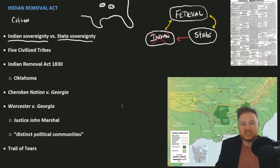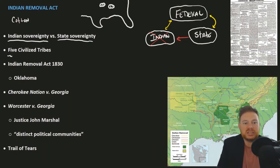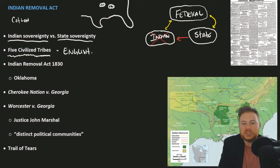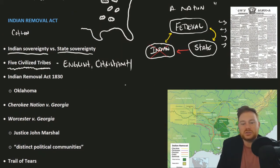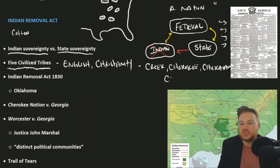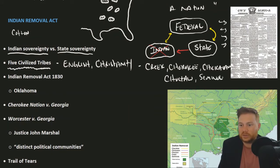This was most clearly the case with the five so-called 'civilized tribes,' mostly located in the South, particularly Georgia. They were referred to as the five 'civilized' tribes because the English language was adopted, Christianity was adopted — here is a Cherokee newspaper — and many of those Native Americans had assimilated into American culture. The tribes are the Creek, the Cherokee, the Chickasaw, the Choctaw, and the Seminole.